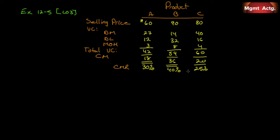Management is trying to determine which products to concentrate on next week in filling its backlog of orders. The direct labor rate is eight dollars per hour, and only three thousand hours of labor time are available each week — so we have three thousand direct labor hours per week.